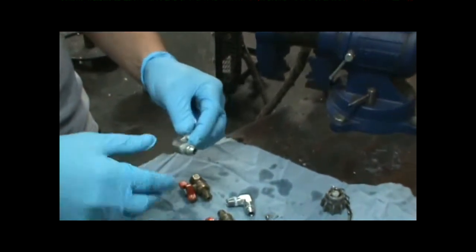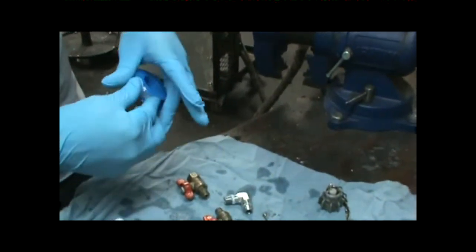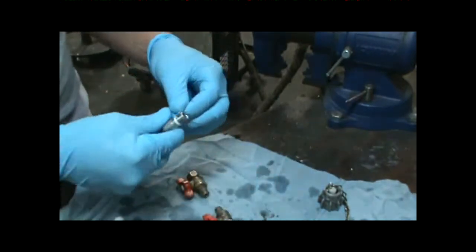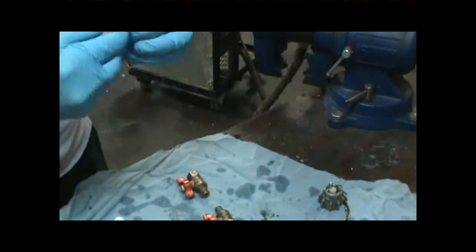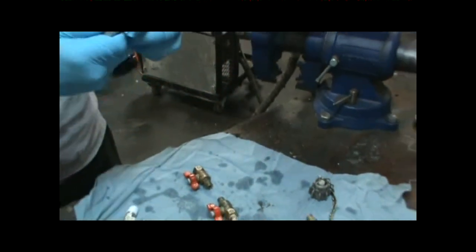This side, do not put Teflon on. It is the compression fitting for the hose. Just the pipe threads is what you want to apply the Teflon to to make sure you don't have any leaks when you reassemble it.